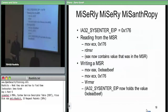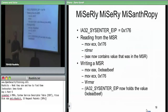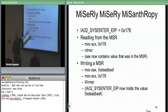To read the sysenter MSR, you move 176 into ECX then do read MSR. That reads the 64-bit register into EDX concatenated with EAX. The lower 32 bits are in EAX. EAX now contains the value because this particular 64-bit register is being used for a 32-bit value, so the upper bits don't matter.